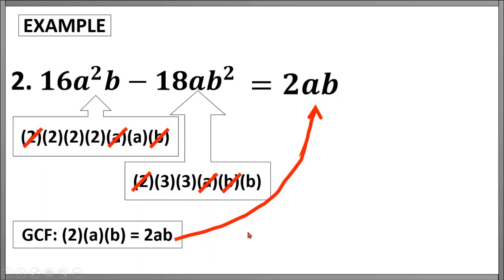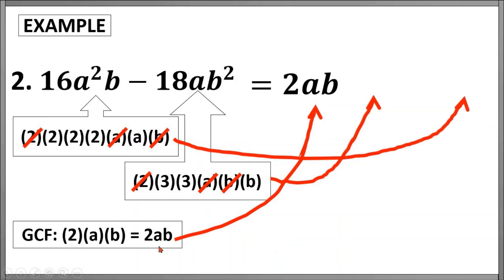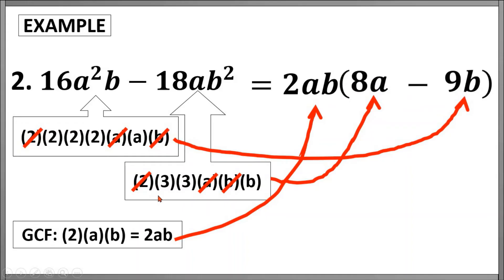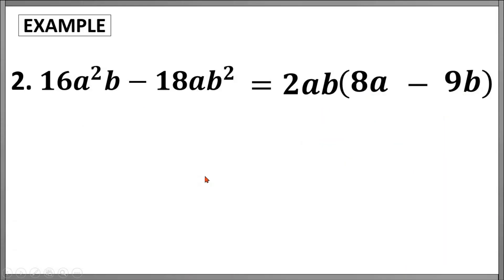This GCF will be one of the factors of our answer. For the second factor, we will use the factors left in these two terms. For the first term we still have 2 times 2 times 2 times a, which is equivalent to 8a. For our second term, 3 times 3 times b, which is 9b, leaving the operation minus. The answer now will be 2ab times the quantity 8a minus 9b. To check our work, we apply the distributive property: 2ab times 8a gives 16a squared b, and 2ab times negative 9b gives negative 18ab squared.